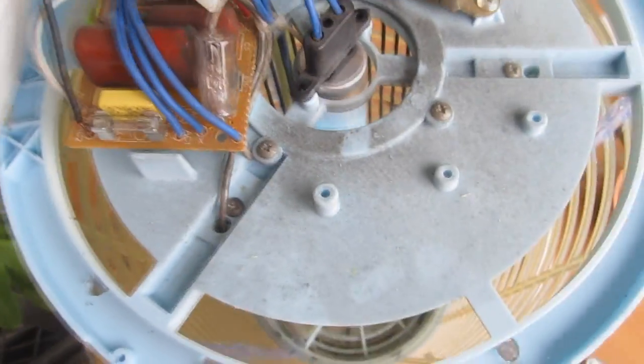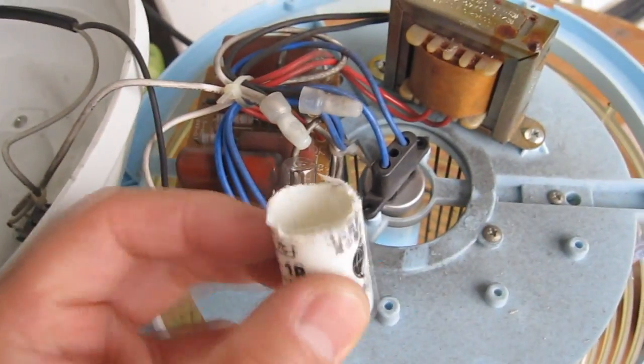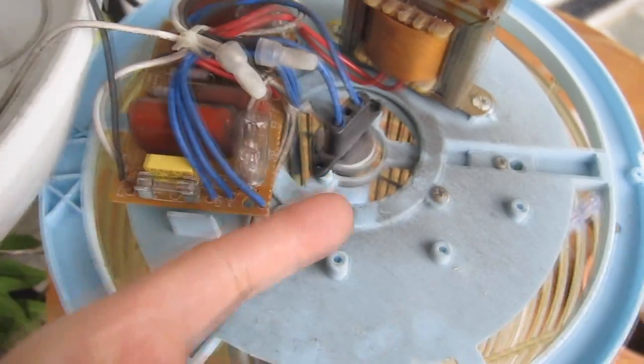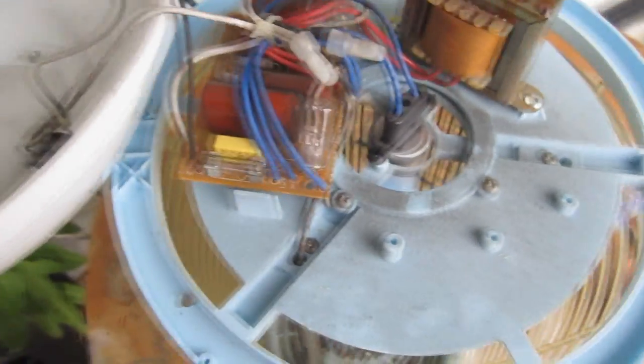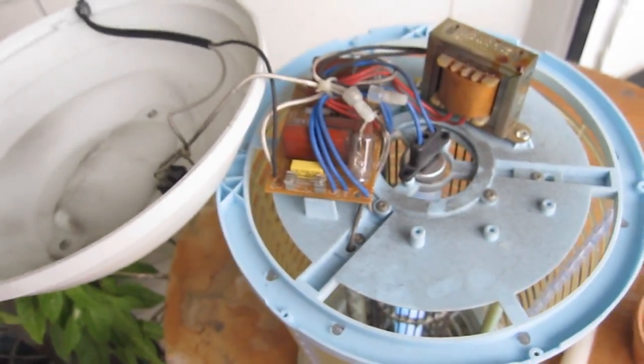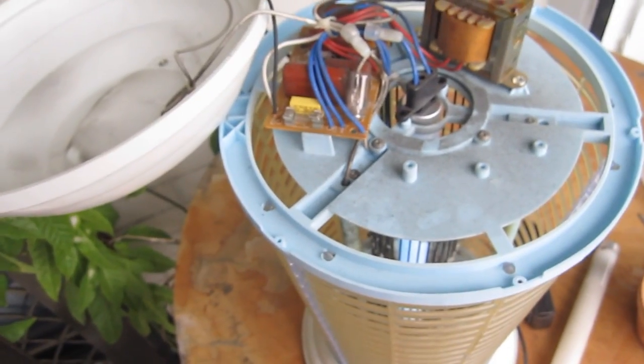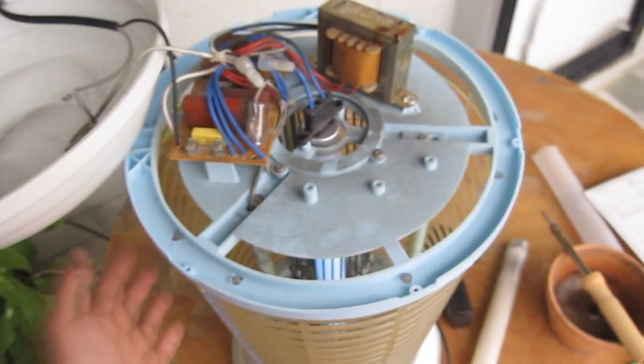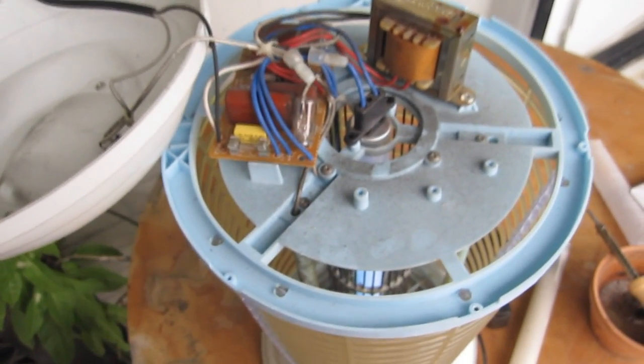So there you have it. By using a around 30 US cent starter, I fixed this bug zapper, thereby saving myself 20 to 30 US dollars if I were to buy a new one. So there you go, turning your old broken stuff into something new.